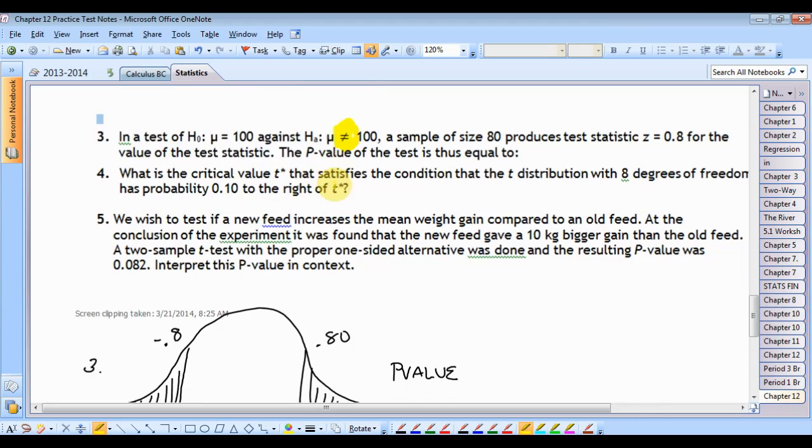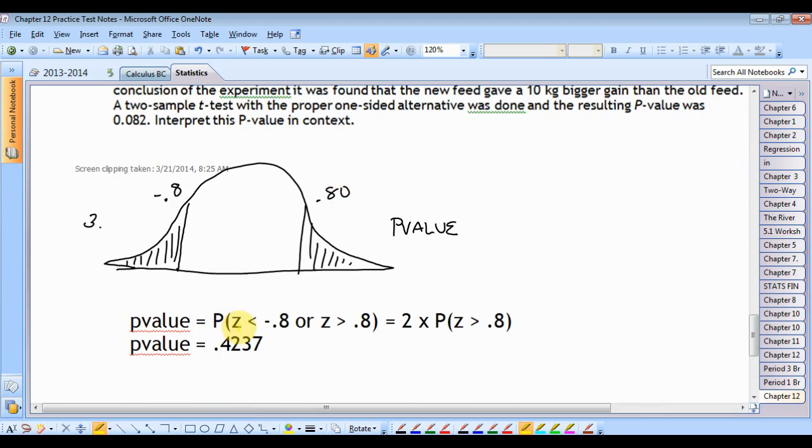So since we have a two-tail test, the p-value is going to be, well, there's a couple ways you could write this. The p-value is equal to the probability that z is less than negative 0.8 or greater than 0.8, which is the same thing as saying two times the probability that z is greater than 0.8. That probability is 0.4237 from the calculator.